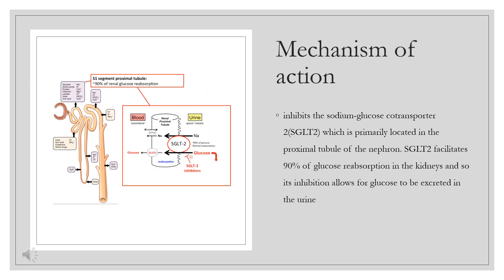Dapagliflozin inhibits the sodium glucose cotransporter 2, SGLT2, which is primarily located in the proximal tubule of the nephron. SGLT2 facilitates 90% of glucose reabsorption in the kidneys, and so its inhibition allows for glucose to be excreted in the urine. This excretion allows for better glycemic control and potentially weight loss in patients with type 2 diabetes mellitus.